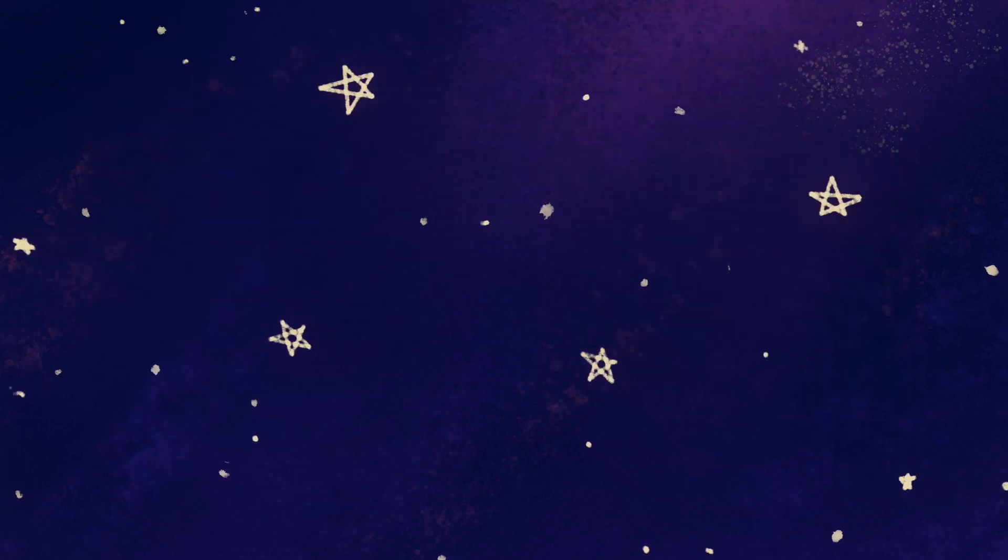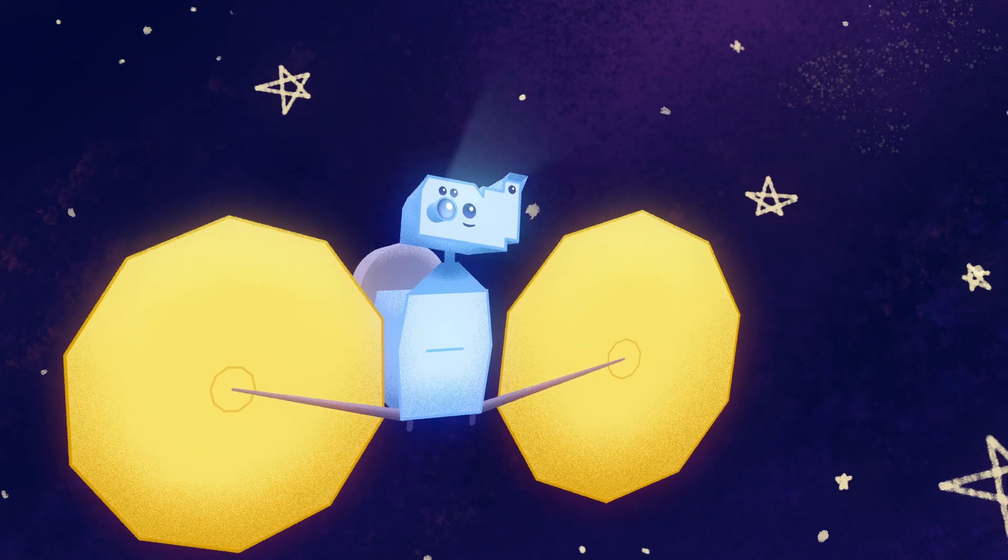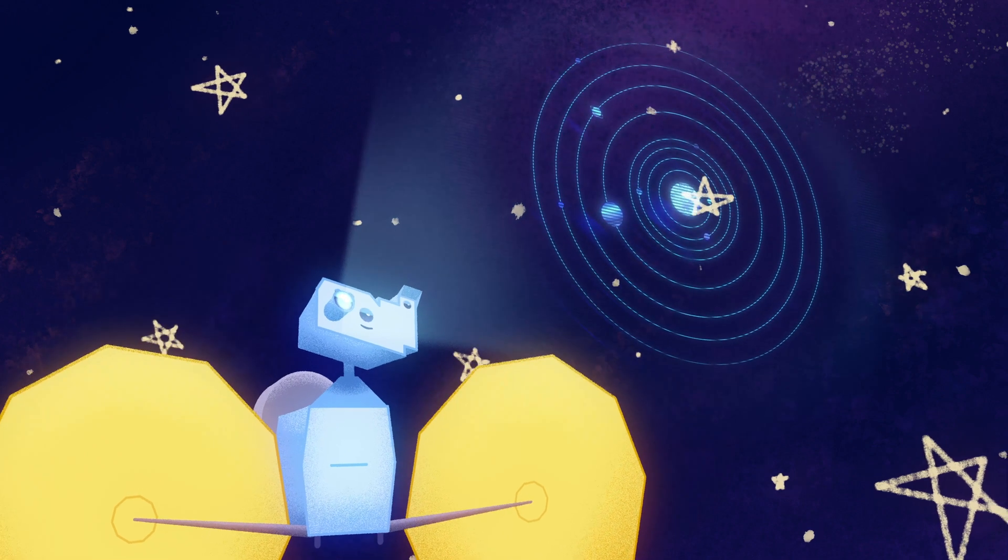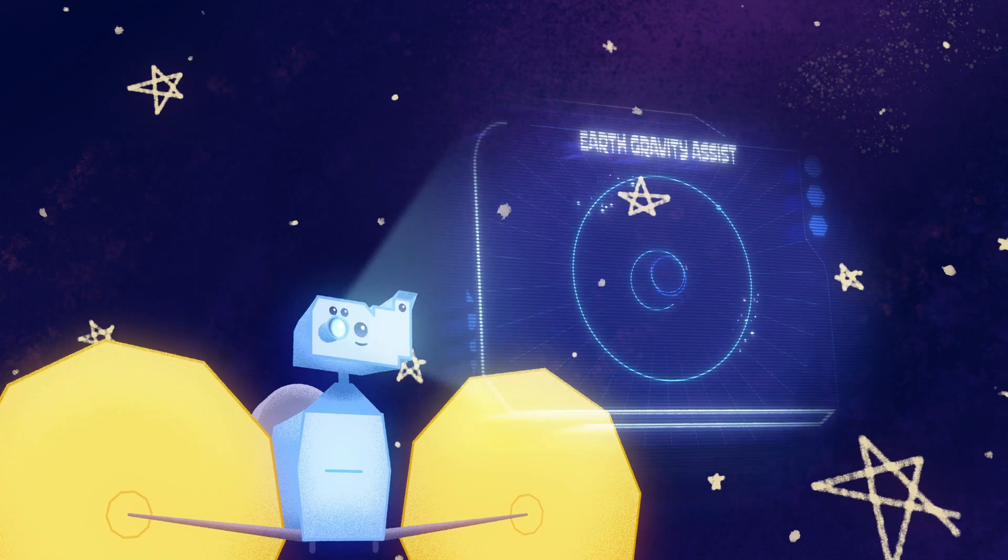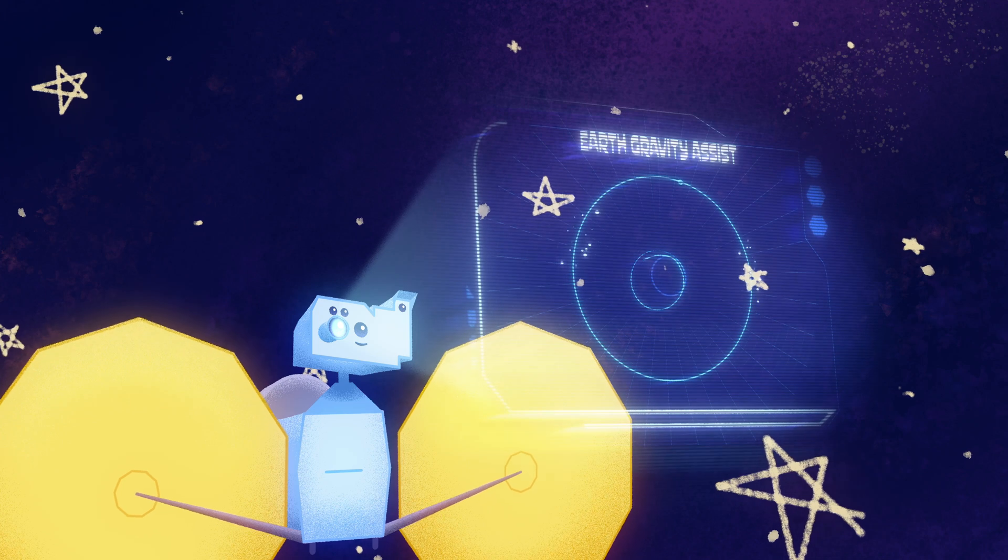You'll need a little bit of help from Earth to boost you all the way to your Trojan asteroid targets. This is an Earth Gravity Assist, or EGA.